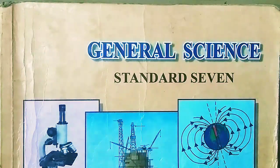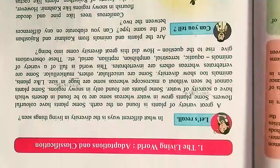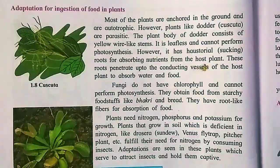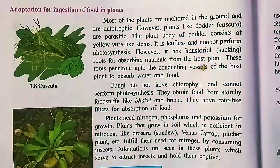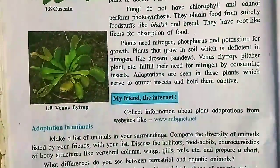Students, today we are going to see General Science of Standard Seven. We are learning the lesson 'The Living World: Adaptations and Classification.' Today we are going to see adaptation for ingestion of food in plants and adaptations in animals.